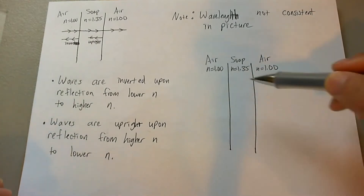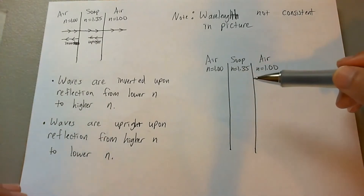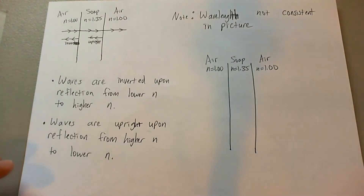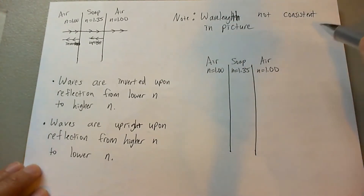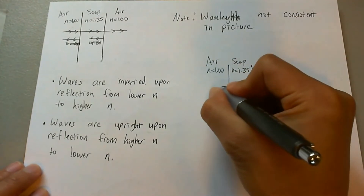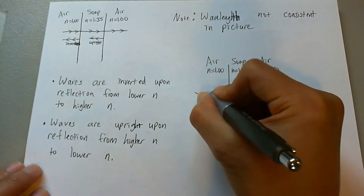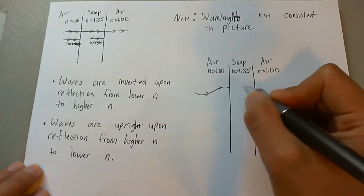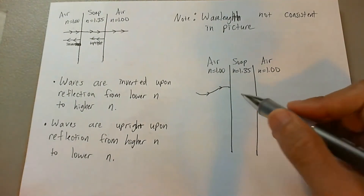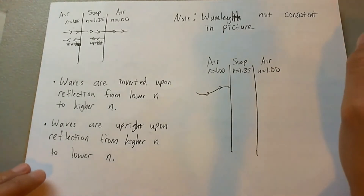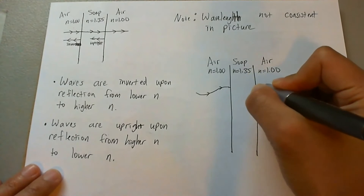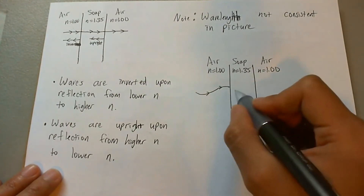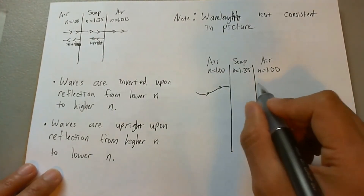We're going to discuss constructive interference, but also how to make them interfere destructively, just so we have that on hand. Note that the wavelengths are not consistent in this picture. What I like to do is start a wave at the very crest as it hits the first border, then use trial and error for what happens inside. The three trials are: put a whole wavelength in, see how it reflects; put a half wavelength in, see how it reflects; and put a quarter wavelength in and see how that reflects.